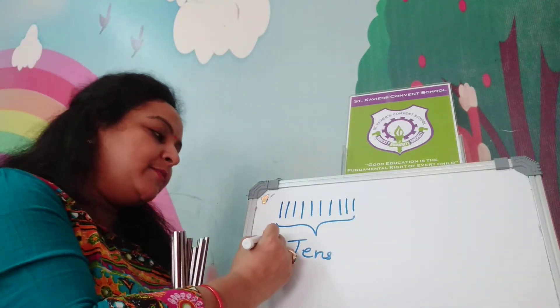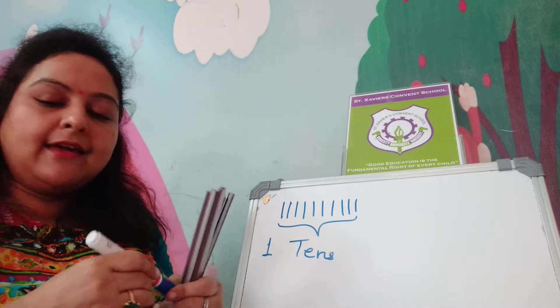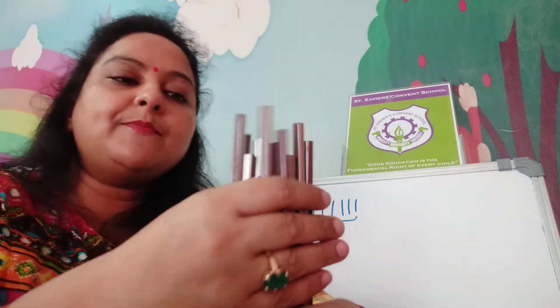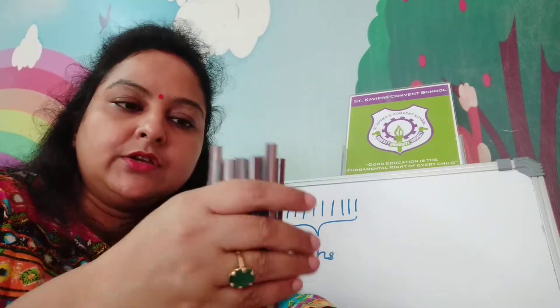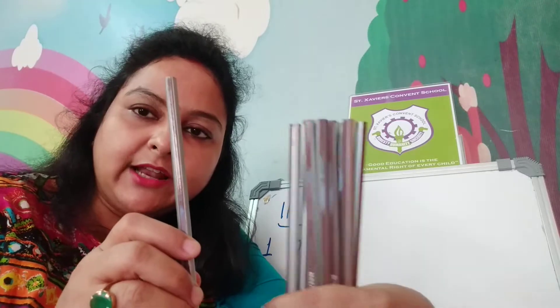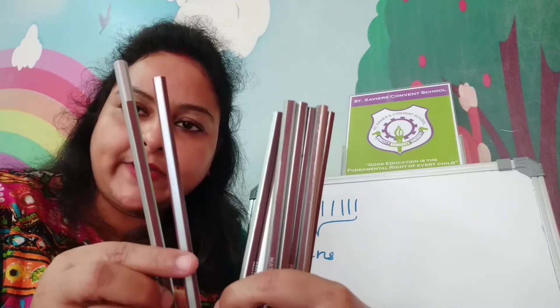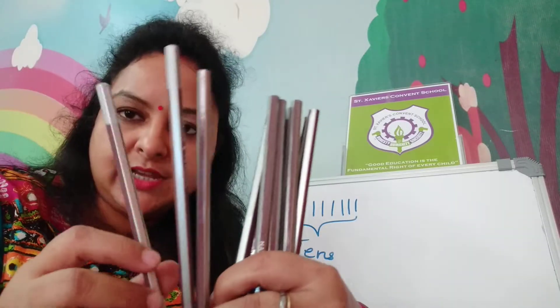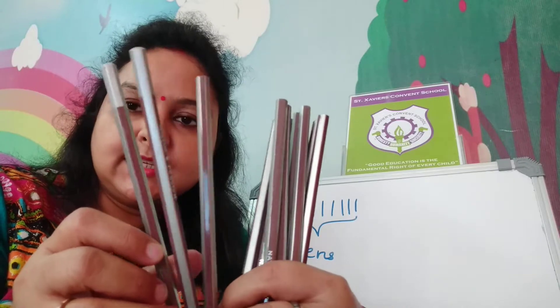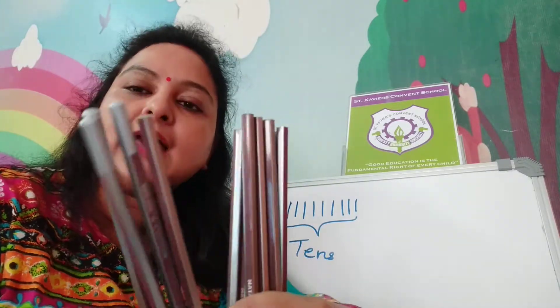How many bundles? One bundle of 10s. If we add more pencils to this bundle of 10 — suppose this 10, now we add one more — so 10 plus 1 is 11. 10 plus 2 is 12. 10 plus 3 is 13. And 10 plus 4 is 14, and so on.